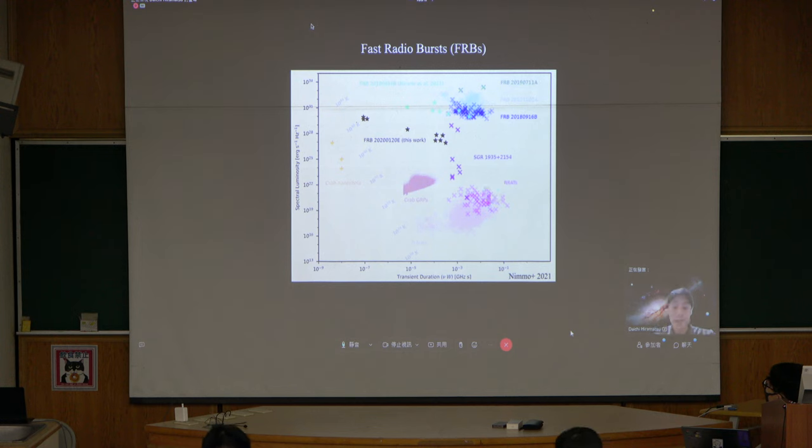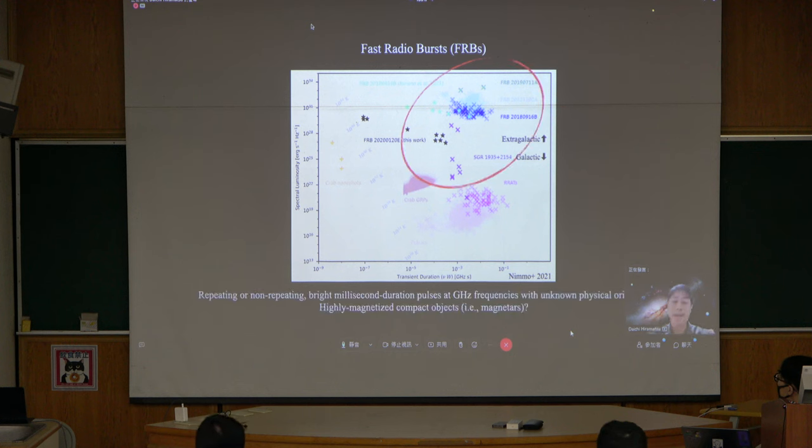There's an interesting case for this SGR, which is the galactic magnetar that had some FRB-like emissions. Anything about that luminosity, we see extragalactic repeating FRB proportions. They are bright at gigahertz frequencies, but the big question is their physical origins.